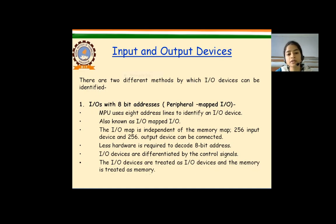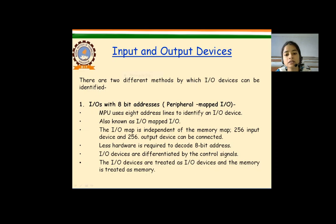The microprocessor interacts with the external world with the help of input and output devices. With input devices, information can be entered — examples are keyboard, mouse, and analog-to-digital converter. With output devices, the microprocessor sends its processed results to the external world — examples are printer and light-emitting diodes. There are two different methods with which input-output devices can be identified or addressed.